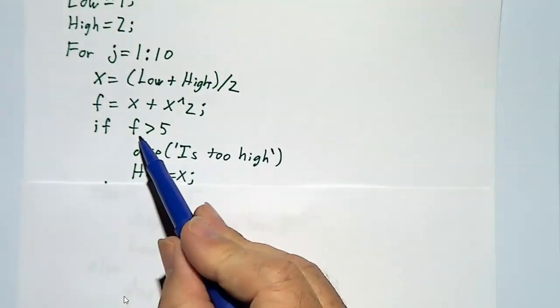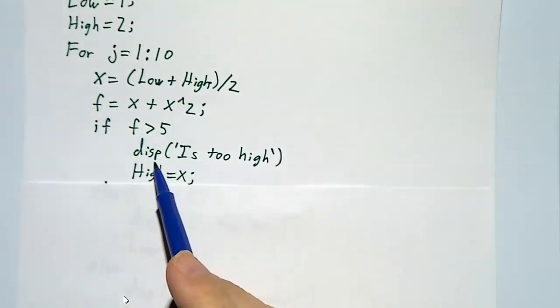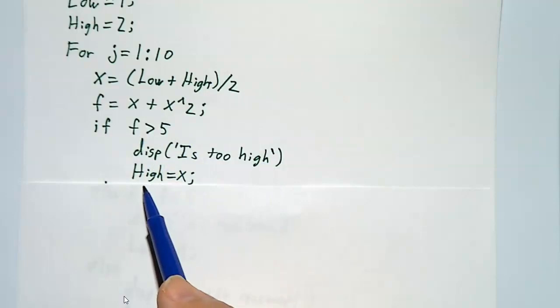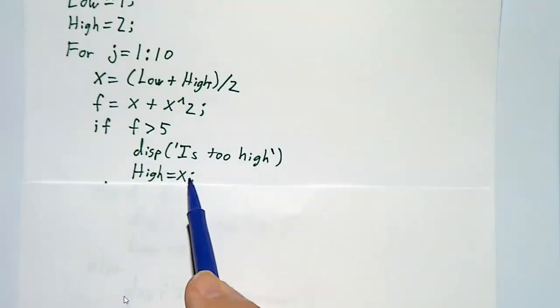If f is too high, if f is bigger than 5, we print out, it's too high. And we replace our upper bound with x.